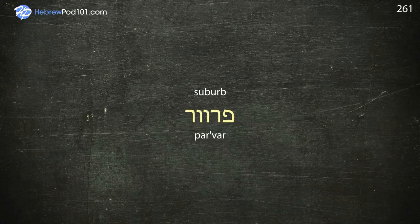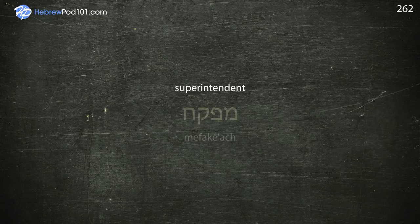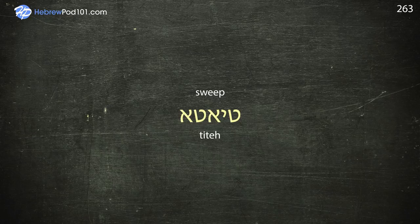Suburb — Parvar. Superintendent — Mepakach. Sweep — Titeh.